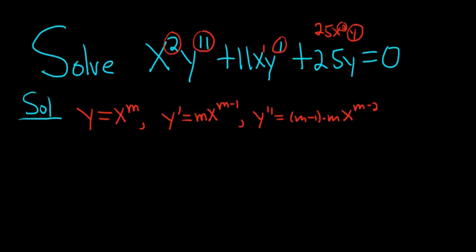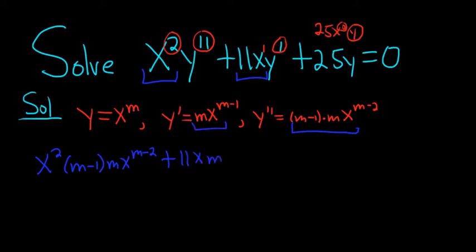Now we're ready to plug everything into the differential equation. So we have x squared, and then y double prime is this piece here. So m minus 1, m, x to the m minus 2. Then we have 11x, so plus 11x, y prime, so that's this piece here. So m, x to the m minus 1.